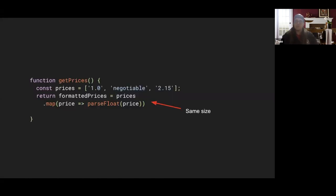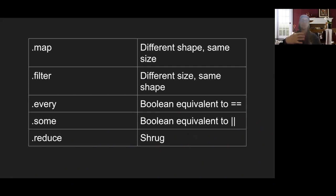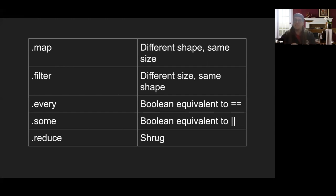As things get more complicated, you can start to segment out the complexity so you can walk through how it works. We're going to map over each item converting it to a float, then filter out information that is not truthy. You know you start with an array of the same size, make a change, and then have something that's the same shape but maybe a different size. Every array method contains innate information. If you have a map, you know you're getting a different shape but the same size. If you have a filter, you get a different size but the same shape. Every and some don't return an array at all — they return a boolean. Reduce gets a little complicated, but at least you start with an initial value, so you can look at that and have an idea of what you'll get in return.